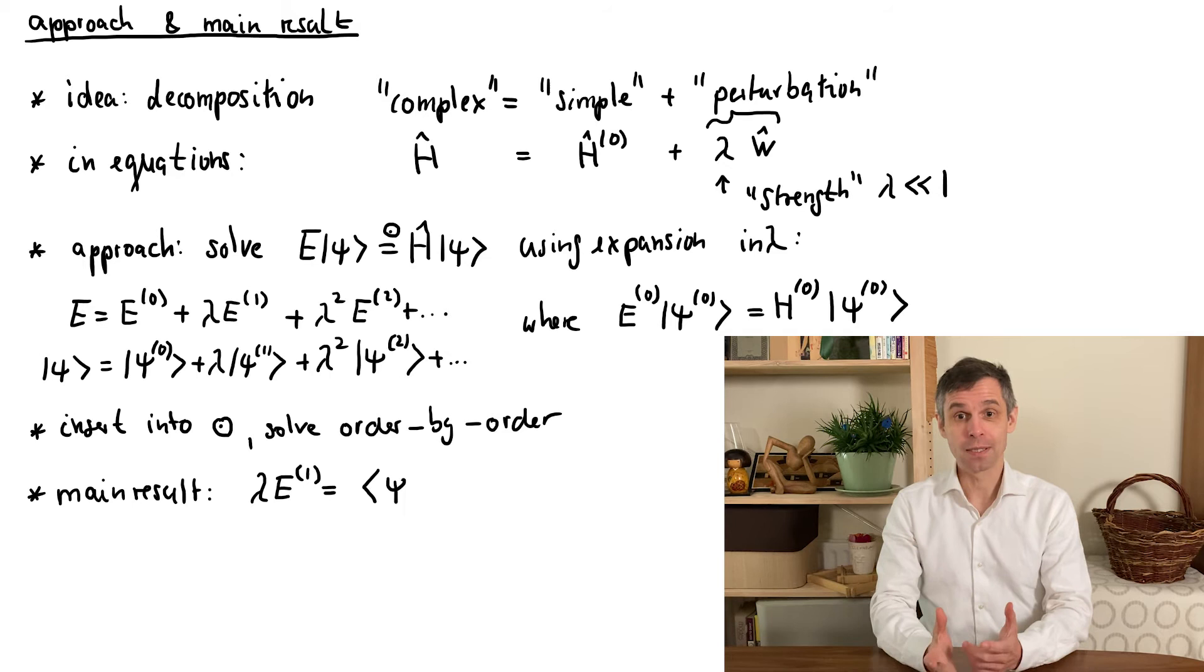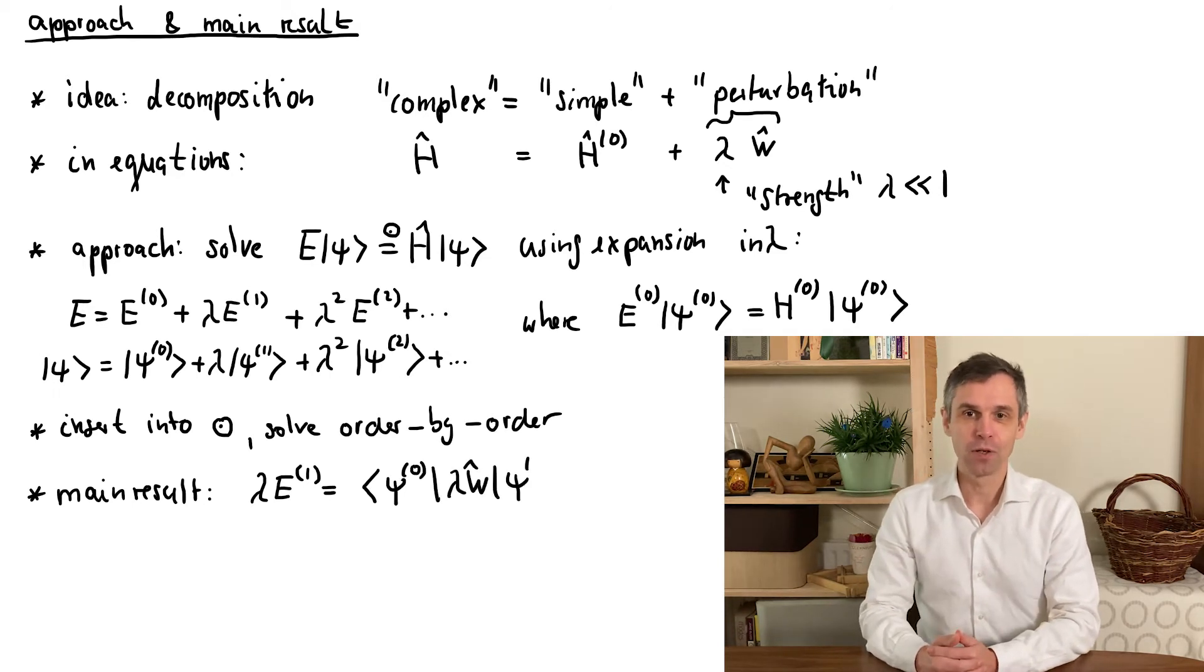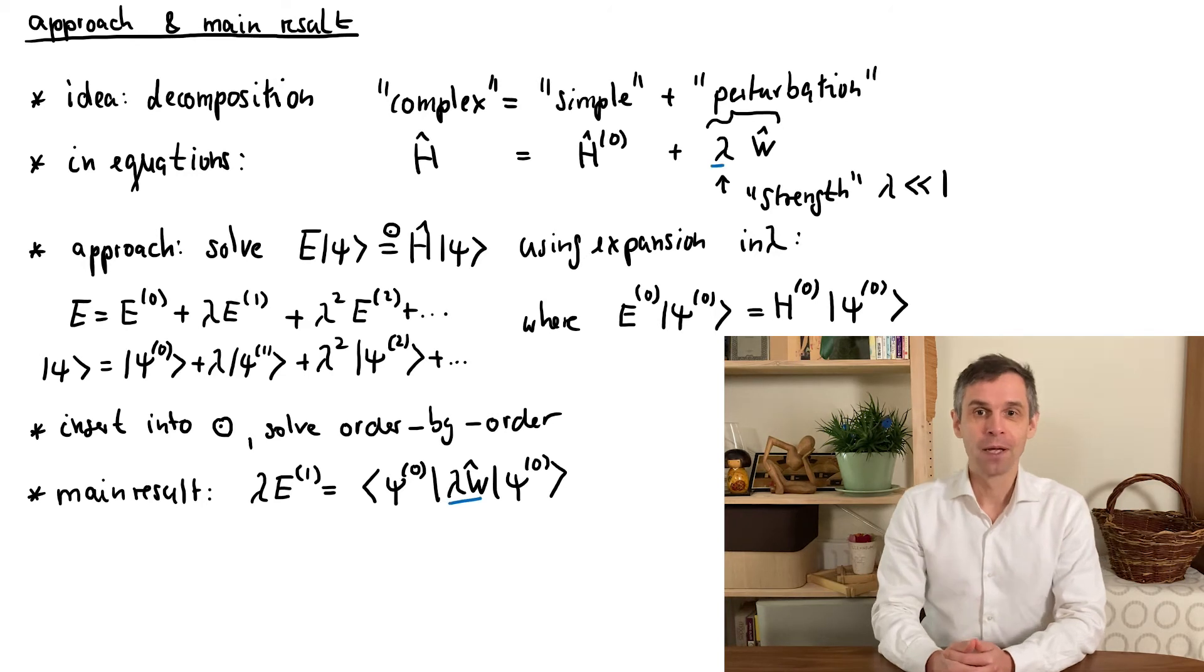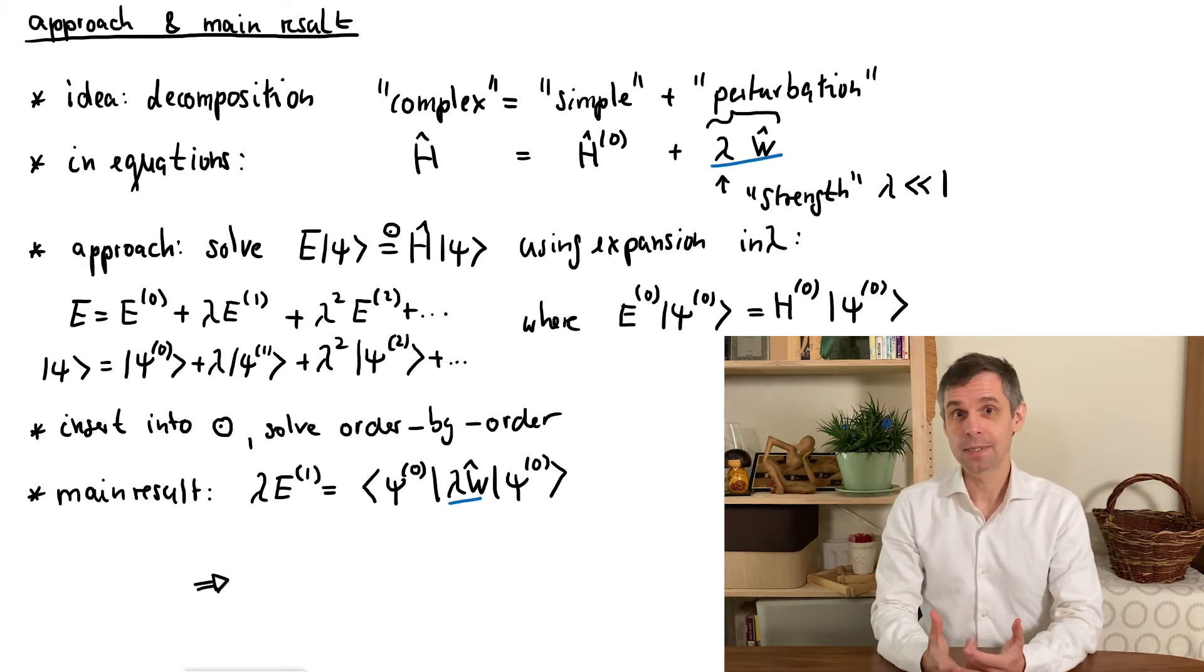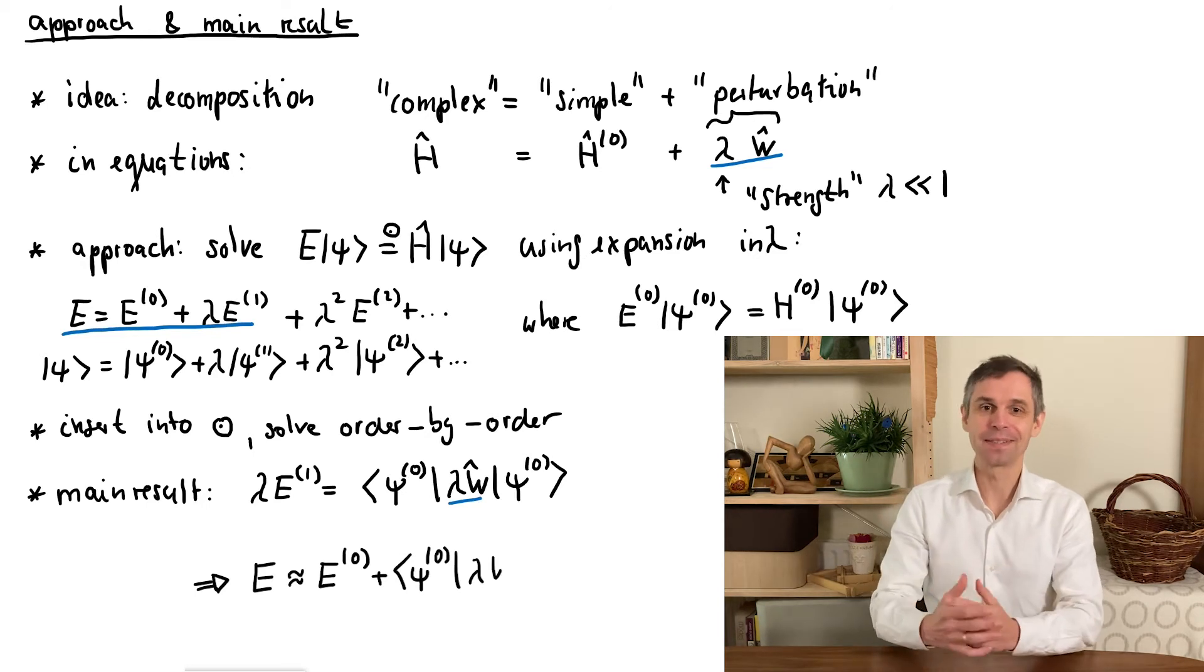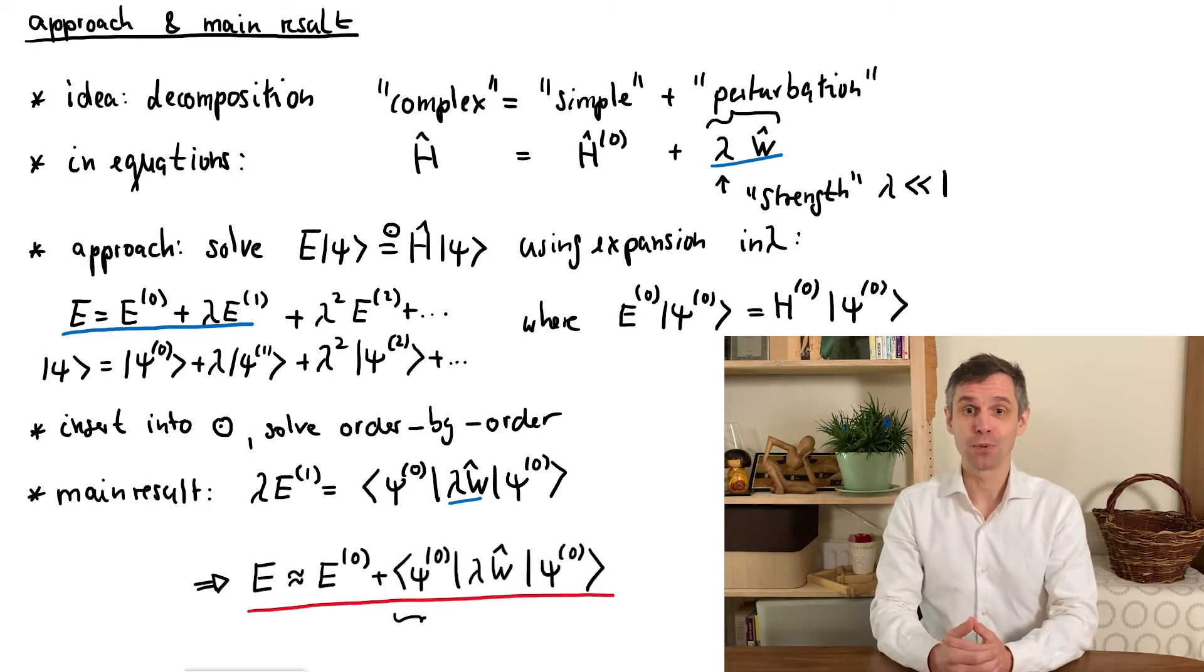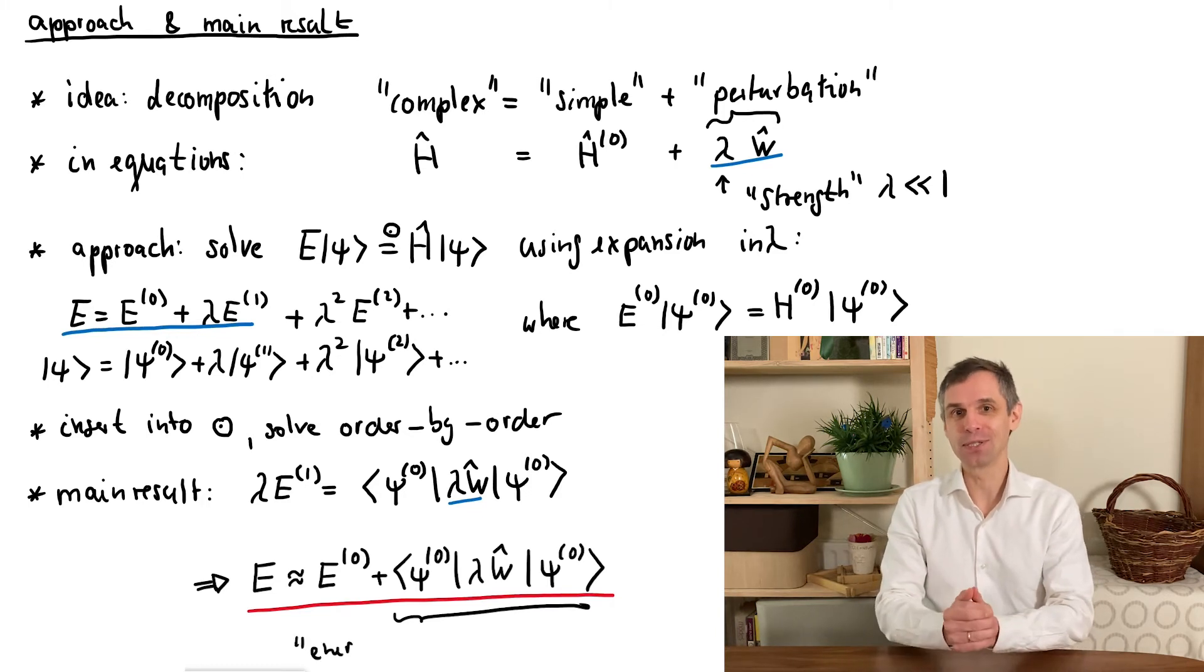This leading correction is simply given by an expectation value, namely the expectation value of the perturbation, which is evaluated in the quantum state of the original system. This has a straightforward physical interpretation, as it describes the averaged energy from the perturbation in this state of the original system.